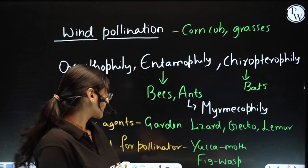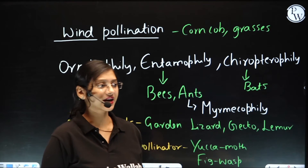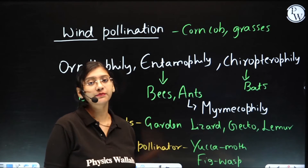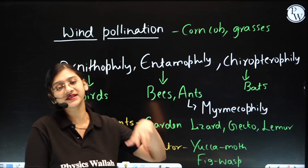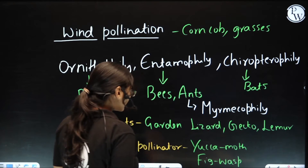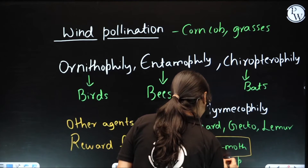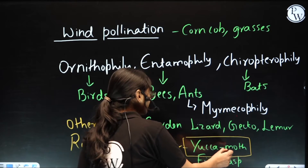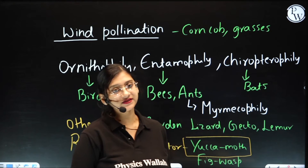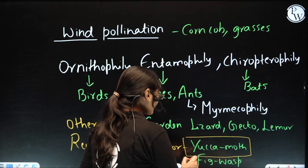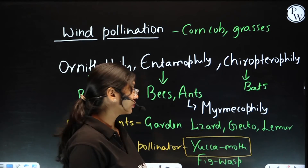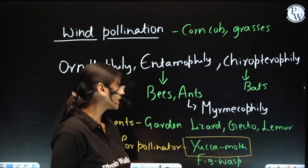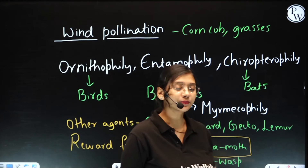There is another concept called rewards for pollinators. That reward can be nectar, or it can be space provided by the flower for laying eggs for some insects. In such a case, the examples can be yucca and moth. Yucca is a plant, moth is an insect — the moth will be laying eggs in yucca and yucca provides space to lay the eggs. Similarly, we can see this in fig and wasp — this is a type of mutual relationship. Both are benefited: the moth or wasp gets space to lay eggs and protection, whereas yucca and fig get pollinated.